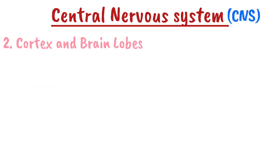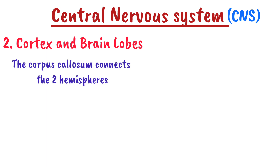Number two of the components of the CNS is the cortex and brain lobes. The cerebrum, which is the largest part of the brain, is divided into two hemispheres connected by the corpus callosum. It has numerous folds called gyri and grooves called sulci, which increase its surface area and processing power. Each hemisphere is divided into five lobes.